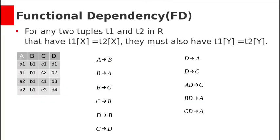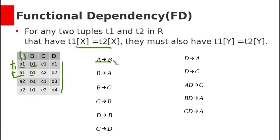To understand this statement, let's see one example. Suppose we have one relation with this data. The first tuple is t1 and the second tuple is t2. t1[A] is a1 and t2[A] is also a1 — both are equal. Then t1[B] and t2[B] should also be equal in order for A→B to be a valid functional dependency. If you take a2 and a2, the B value is also the same. So A→B is a valid functional dependency.